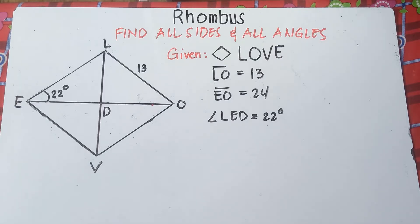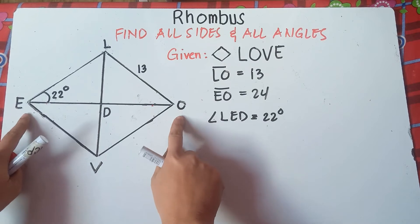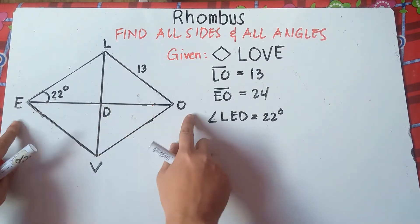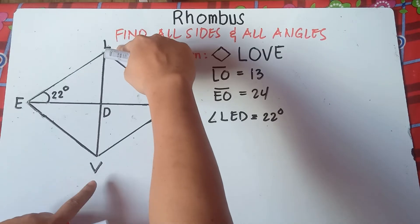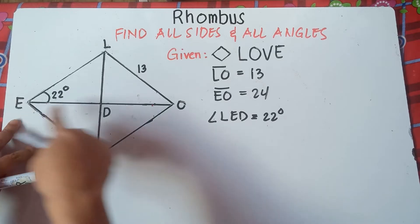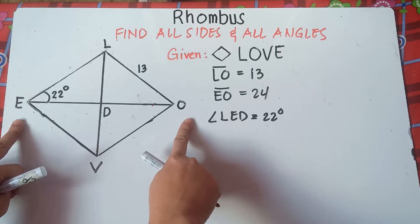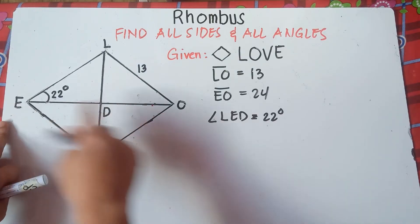What do you mean by bisect? The word bisect means that they cut the angles into half — cutting an object into half. So this diagonal EO cuts these opposite angles into half. The opposite angles are angle E and angle O, and angle L and angle V. So the measure of angle E is the same as angle O, because opposite angles are congruent — that's according to its properties. And the diagonal EO bisects this angle, cutting it into half.